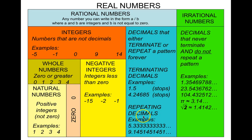For example, 5.3 repeating — the 3 just keeps repeating over and over forever. Here's another example: 9.14514514 5... Notice the 145 just keeps repeating. So it's considered a repeating decimal and a rational number.